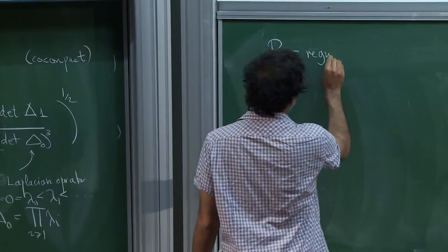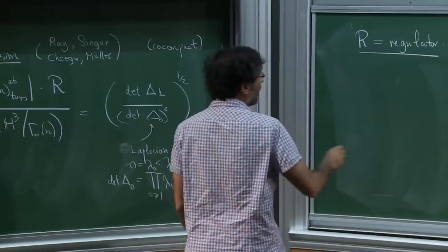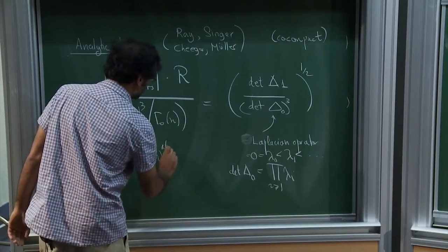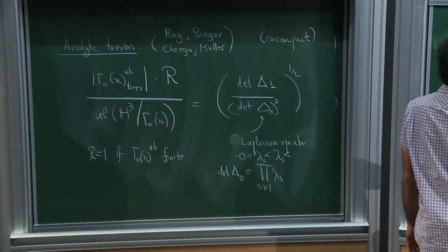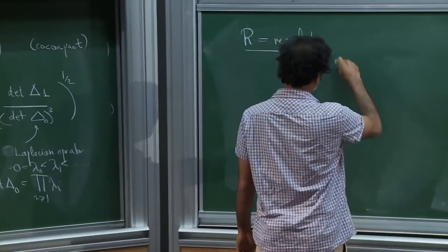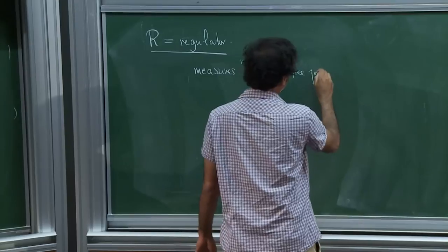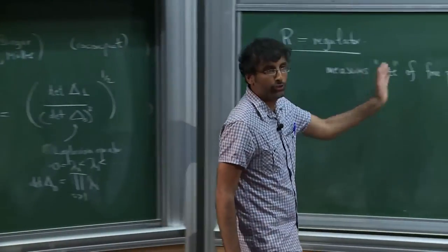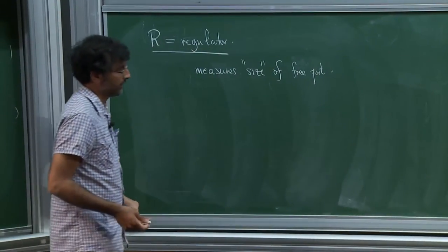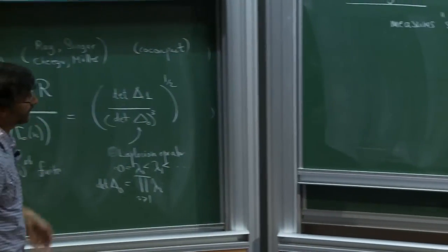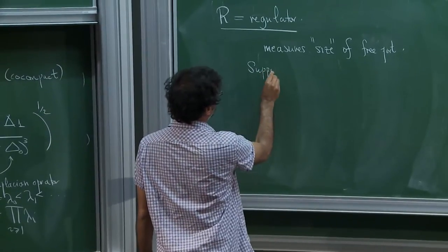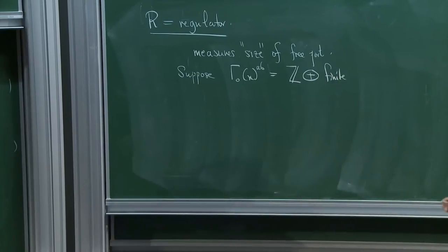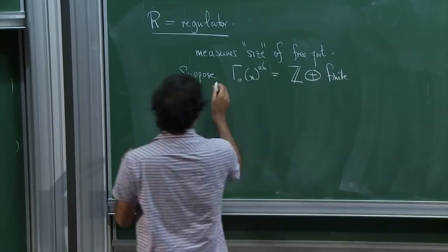What is R? This is what I call the regulator. R equals one when the abelianization is finite, as I said earlier. In general it's meant to measure the size of the free part. Just as in the case of number fields, in general it's some expression with determinants. To keep life simple, I'll just talk about the case where it has rank one, so I don't have to write down determinants.